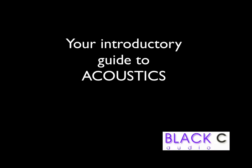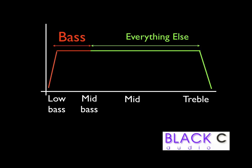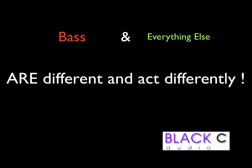Welcome to Black Sea Audio's Guide to Acoustics. The very first thing to do is chop the audio spectrum into two different areas: bass, which is everything below about 300 hertz, and everything else above 300 hertz. The reason we do this is that the two areas act differently, react differently, and have different effects on both us and the sound itself.